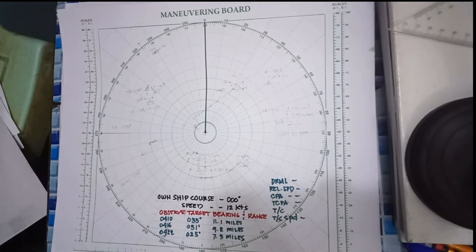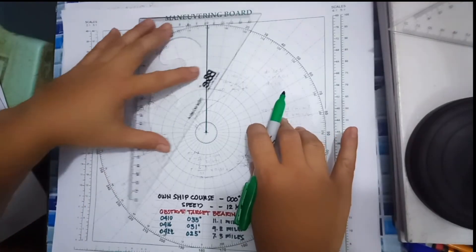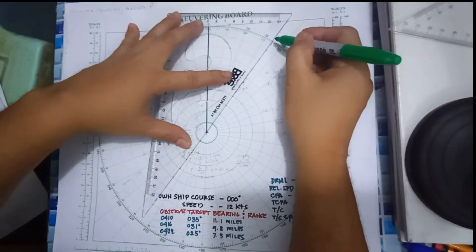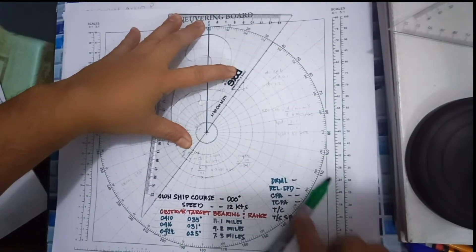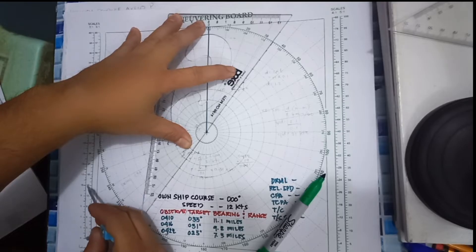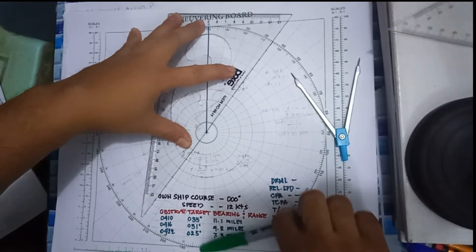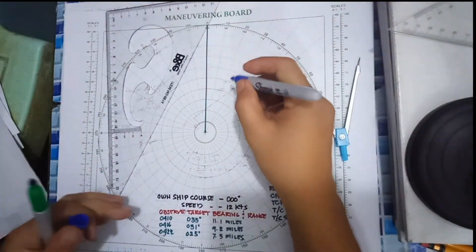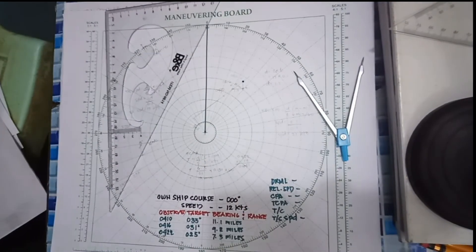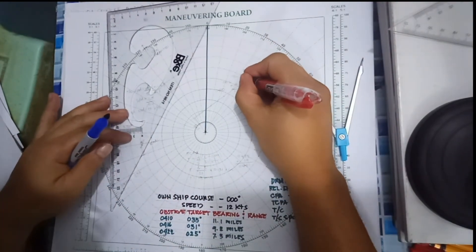Our first bearing is 035 degrees with a distance of 11.1 miles. So it's here, 035 degrees, 11.1 miles. This is your first bearing and this will be your R. The first bearing will be your R.